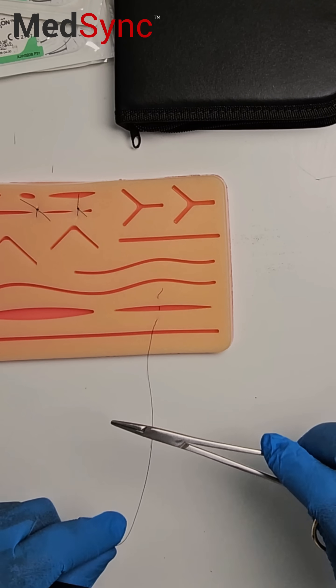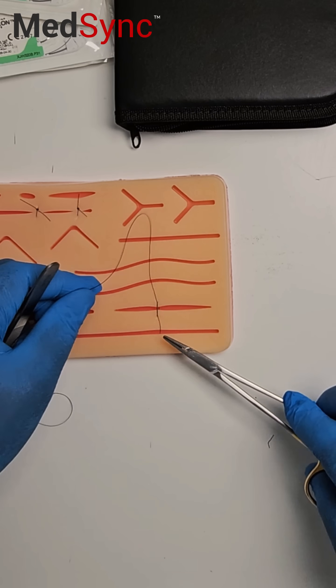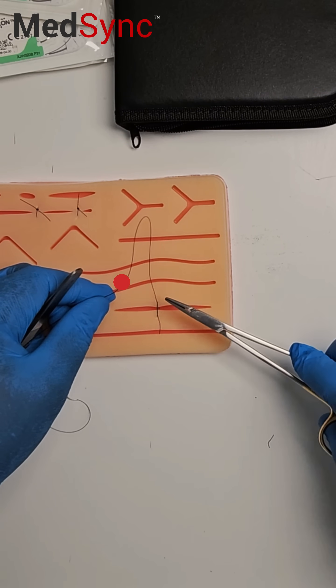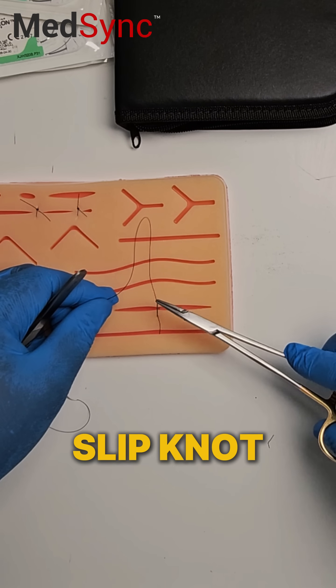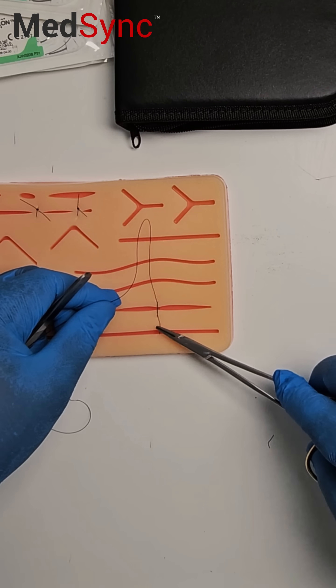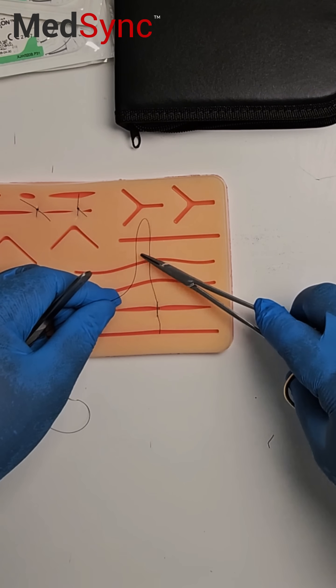So then the other option is this. If you can see the short end is here, the long end is here. I'm going to do a slip knot, which means the short end is going to come back here and the long end is going to come back over here.